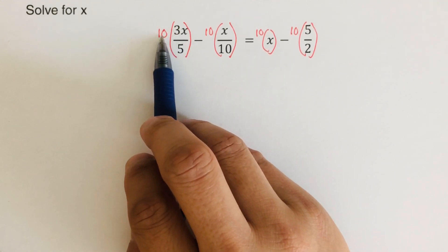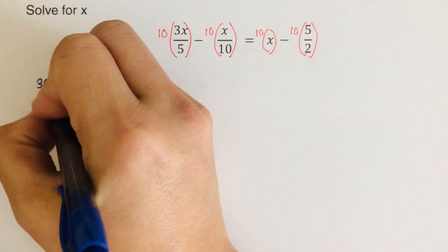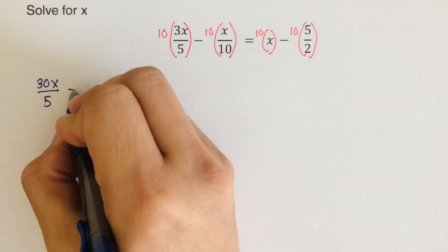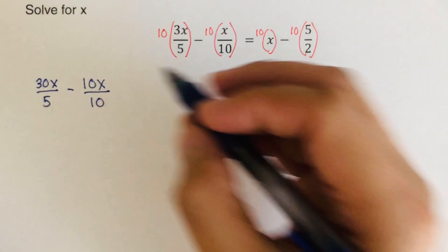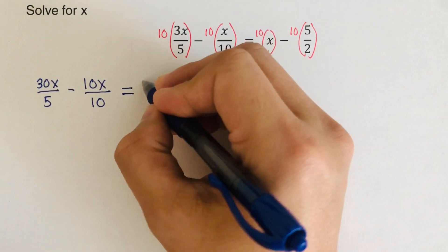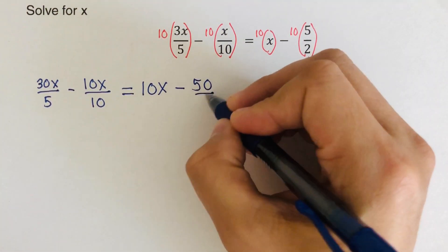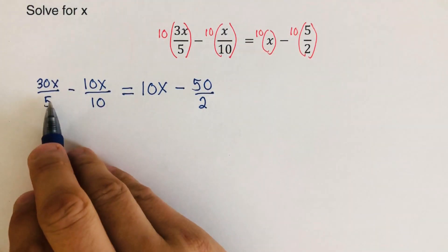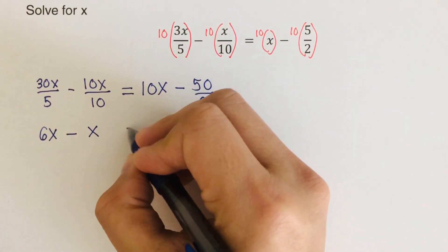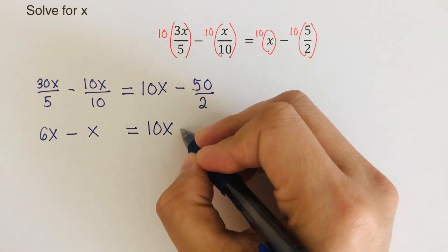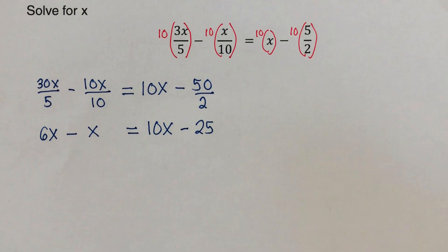Continuing the multiplication: 10 times x over 10 gives 10x/10, and on the right side 10 times x is 10x, and 10 times 5 is 50 over 2. Simplifying: 30/5 is 6, so we get 6x minus x equals 10x minus 25. The fractions have been eliminated.